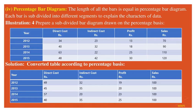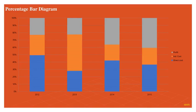Percentage bar diagram is like the subdivided bar diagram, but it is converted into percentages so that all bars have equal heights. Here we find the conversion into percentages for different variables: profit, indirect cost, and direct cost. The percentage of profit for the last year gives a clear idea about the variables.